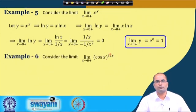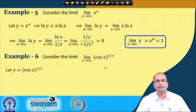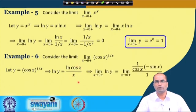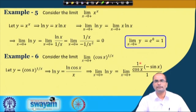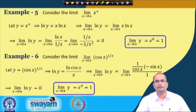Another example: limit as x→0 of cos(x)^(1/x), a 1^∞ form since cos(x)→1 and 1/x→∞. Set y = cos(x)^(1/x), so ln(y) = ln(cos x)/x — a 0/0 form. Applying L'Hôpital's rule: derivative of ln(cos x) is −sin(x)/cos(x) = −tan(x), divided by 1. As x→0, −tan(x)→0. So the limit is e⁰ = 1.